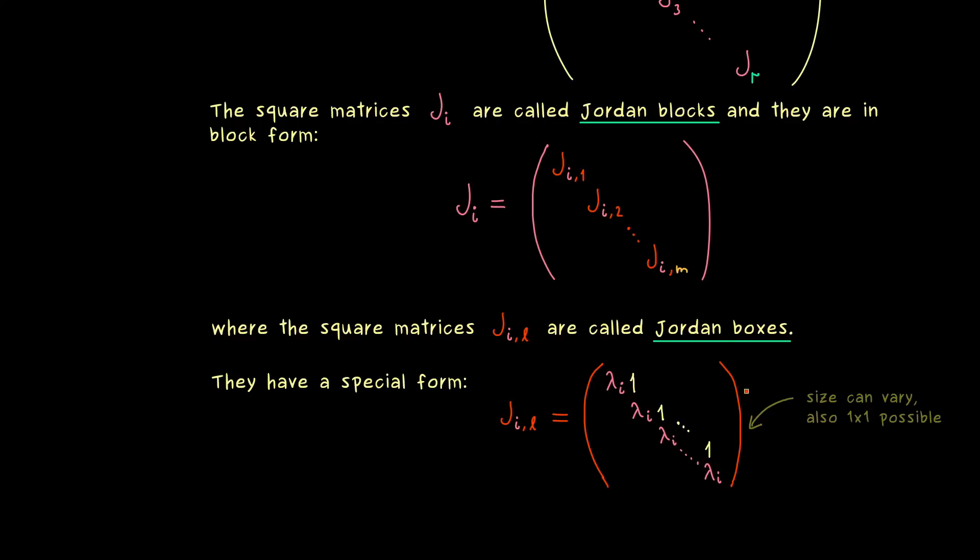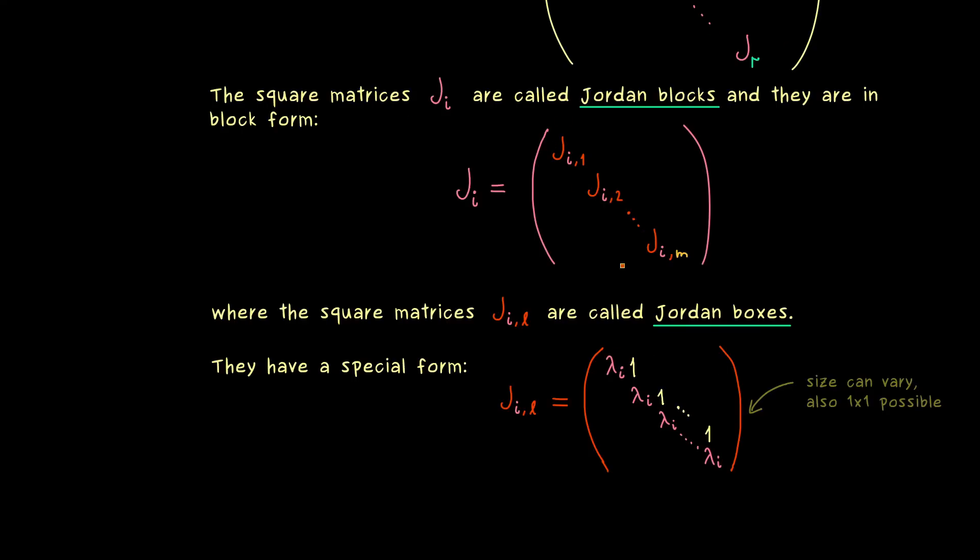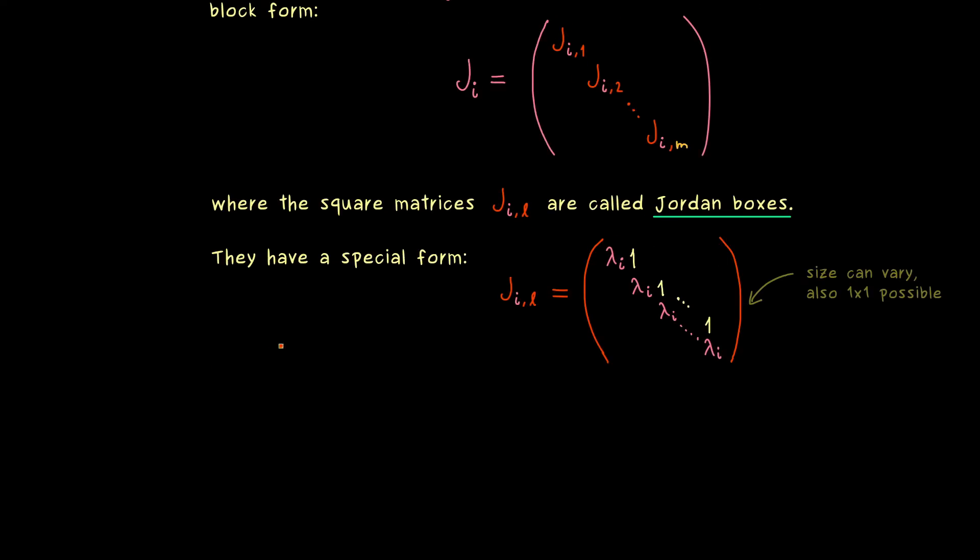And there please don't forget, Jordan boxes can occur in a lot of sizes and also 1x1 is possible. And in that case it will only contain one number lambda i. And there we have it. This is the whole definition of the Jordan Normal Form and you might say it looks and sounds complicated.